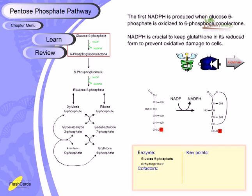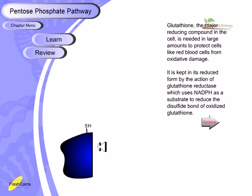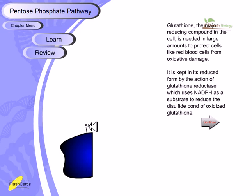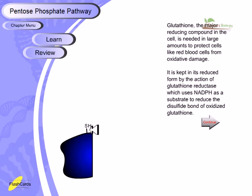Glutathione is the major reducing compound in the cell and is needed in large amounts to protect cells like red blood cells from oxidative damage. Oxidative damage can be caused by free radicals, which are very dangerous and can eventually kill the cell. Glutathione is kept in the reduced form by the action of glutathione reductase, which generates SH groups instead of a sulfur-disulfide bond.